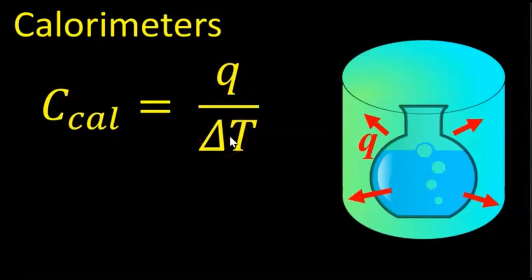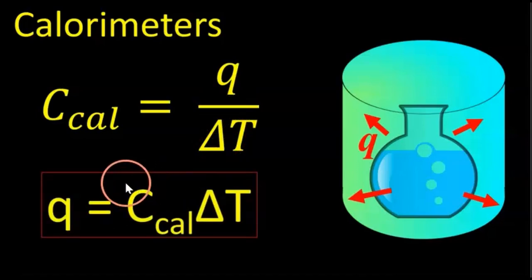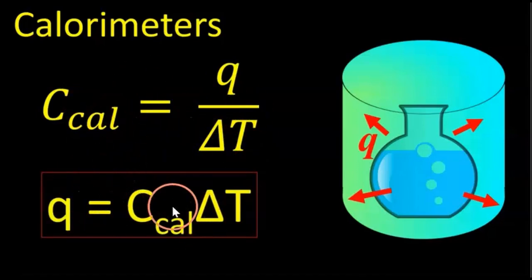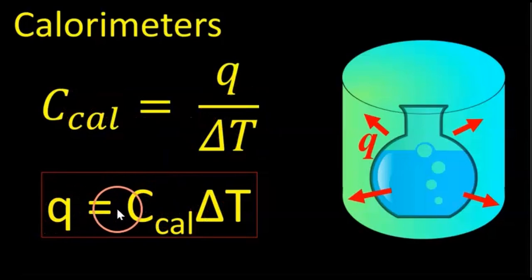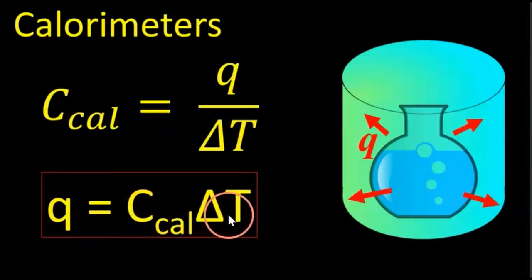In calorimetry problems, we usually use this equation this way: the energy transferred as heat equals the heat capacity of the calorimeter times the change in temperature.